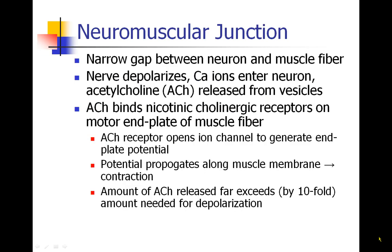Before we talk about these drugs, we should review the physiology of the neuromuscular junction. This is the narrow gap that exists between the neuron — the nerve cell — and the muscle fiber. What happens is the nerve depolarizes; this is how a charge comes down the long nerve cell by the depolarization of the membrane potentials generated by ions.